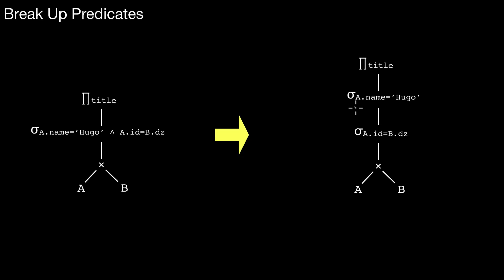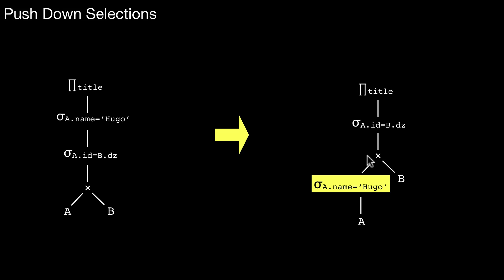Now, what can you do with that? Notice that this here refers to one of the input relations only, A. This refers to both A and B. In order to evaluate this one, you have to have the information from both sides. In order to evaluate this one, you only need the information from one side, namely A. This means we can push down this selection condition down the tree. That is done with the next rule. This is called the push-down selection rule.